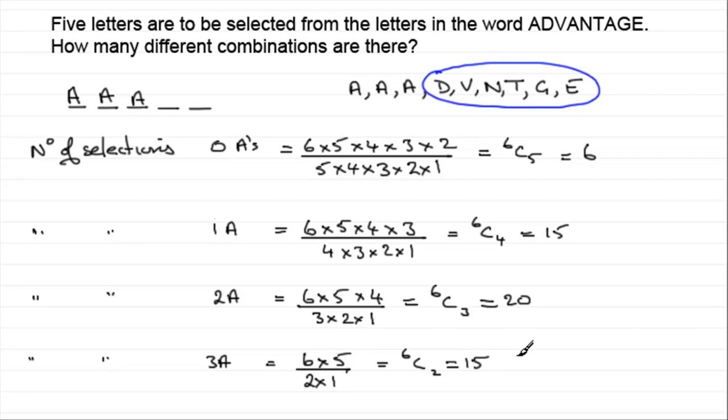Now we're interested in the total number of selections. So what we've got to do is simply add up these values: six, 15, 20, and 15. Therefore, the total number of selections equals six plus 15 plus 20 plus 15. And what that comes to is 56.